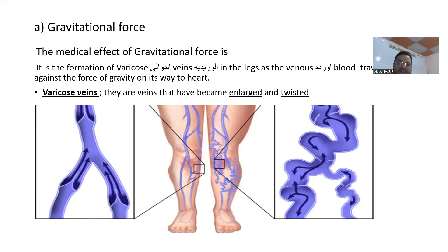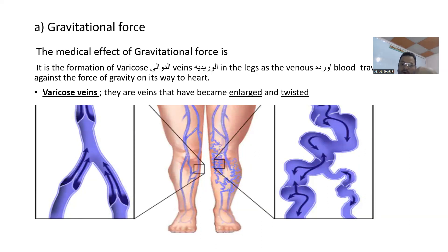Blood flows through the body via arteries and veins, but today we will focus on veins. At rest, the blood will flow from our heart going out in the direction of the earth, which equals the gravitational force direction. That means the blood will flow from my heart to my legs and to my hands.